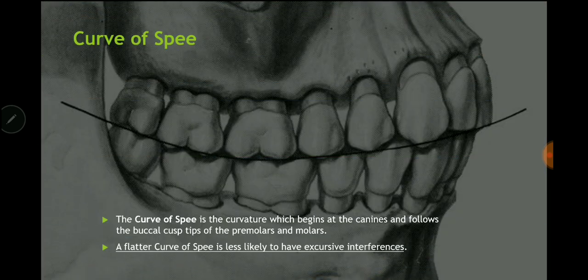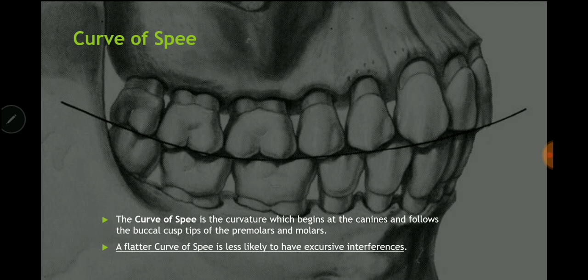The rotating condyle is the condyle on the working side. The curve of Spee was discussed in the dental anatomy lectures — review those six or seven lectures. The curve of Spee is the curvature which begins at the canines and follows the buccal tips of the premolars and molars. A flatter curve of Spee is less likely to have excursive interferences because everything is on the same flat level.